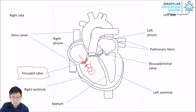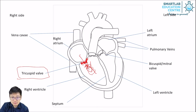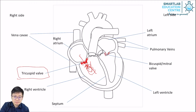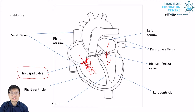You can see the shape of the flaps — if the blood pushes back, the valves will just shut. The same thing happens on the left side of the heart. The bicuspid or mitral valve is the name of the valve that divides the left atrium from the left ventricle. Blood can flow easily from the left atrium to the left ventricle as long as the pressure is higher in the left atrium. If the left ventricle contracts, blood cannot flow backwards because the valve will shut.